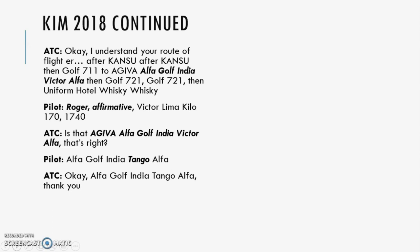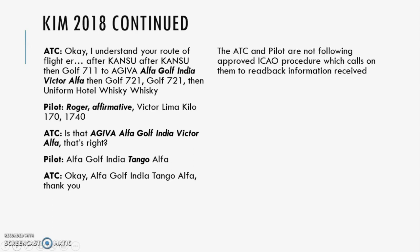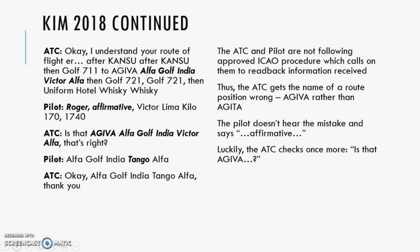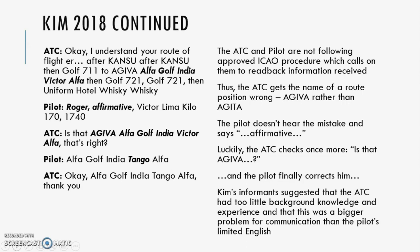The pilot responded affirmatively. The air traffic controller, uncertain, checked: is that Agiva — Alpha Gulf India Victor Alpha? The pilot then corrected the mistake: Alpha Gulf India Tango Alpha — correcting Victor to Tango. The air traffic controller confirmed: Alpha Gulf India Tango Alpha, thank you. In this example, the controller and pilot were not following approved International Civil Aviation Organization procedure requiring readback of received information. The air traffic controller got the waypoint name wrong, the pilot initially didn't catch it, but fortunately the controller checked once more and the pilot corrected him. Kim's informants suggested the controller had too little background knowledge and experience, and this was a bigger problem for communication than the pilot's limited English.